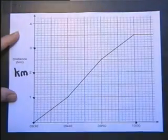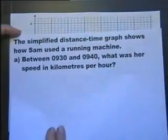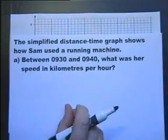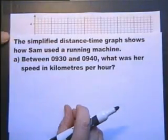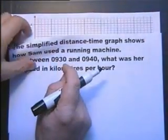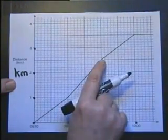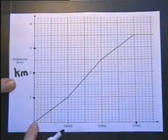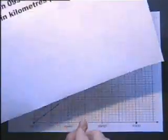We've got some questions on this distance-time graph. The simplified distance-time graph shows how Sam used a running machine. The reason it says simplified is because it's made up of straight lines, and in reality they would be a bit squiggly.